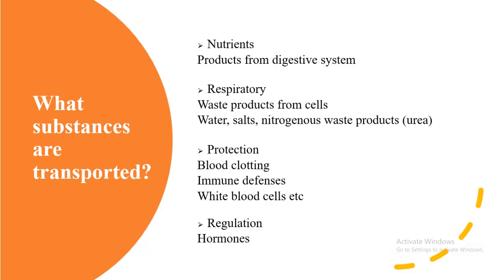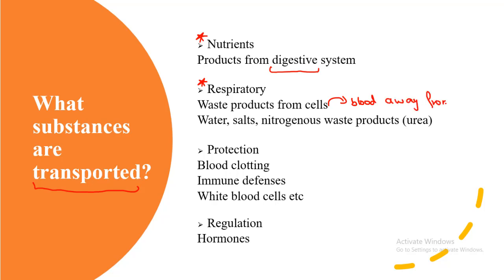What substances are transported in the systemic circulation? First, nutrients — which include all the products of food digested in the digestive system — and respiratory substances. Waste products from the cells are also carried away by the blood, including water, salts, and nitrogenous waste such as urea.